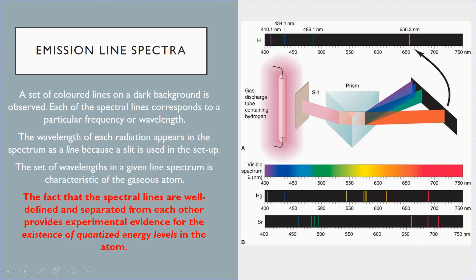it shows that the frequency of these colors can only take certain values. And because the frequency is dependent on the energy levels of the atom, therefore it provides evidence that within the atom, the energy levels are also quantized — they can only take certain values.